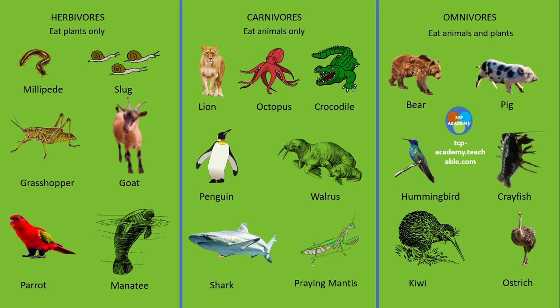Omnivores refer to animals which eat both animals and plants. Examples include bear, pig, human, hummingbird, crayfish, kiwi, and ostrich.